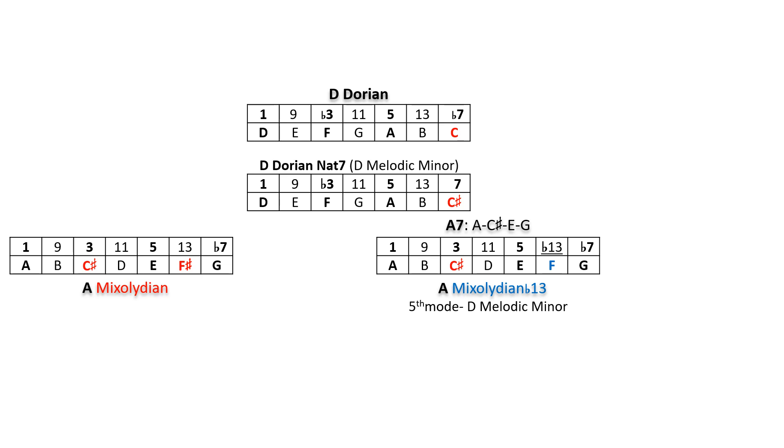The minor scale closest to D dorian is D dorian natural 7, also known as D melodic minor. C sharp is the only note that's different, therefore the most inside scale to play over A7 is A mixolydian flat 13, the fifth mode of D melodic minor.